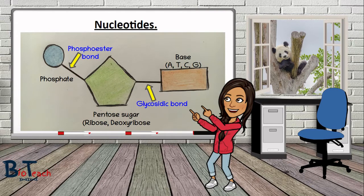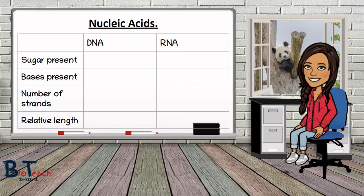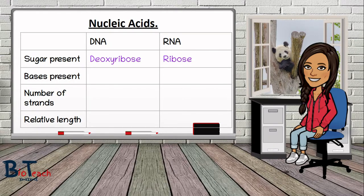If you need to revise the glycosidic bond, click the link at the top of the video. You might wish to pause the video to draw this nucleotide as part of your revision notes. The two nucleic acids you need to know are DNA and RNA. I've put together a comparison table showing the four main differences between them. Firstly, DNA has deoxyribose as its pentose sugar whereas RNA has ribose. You don't need to draw these sugars, but there is a slide later showing the differences.